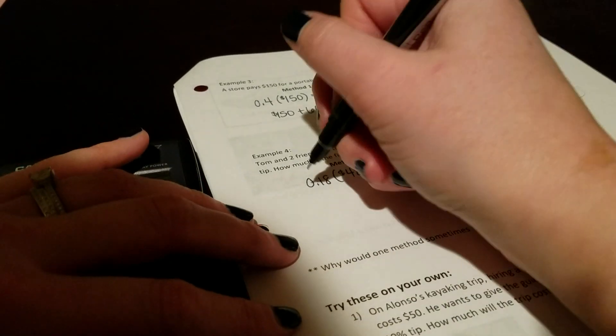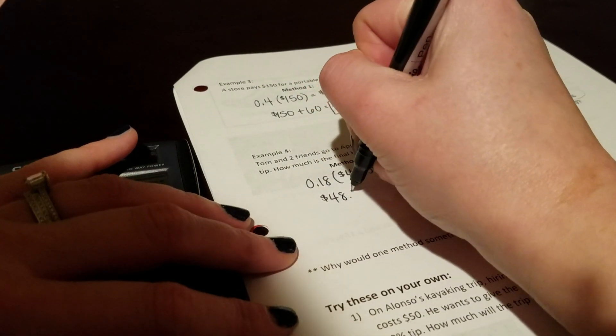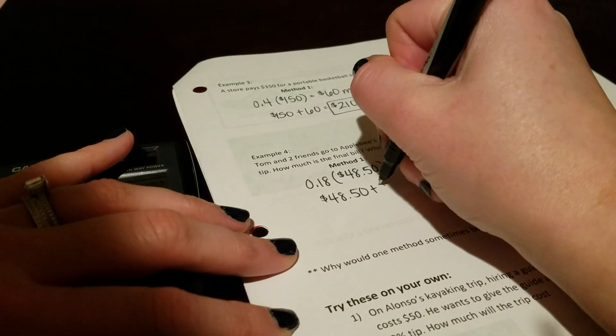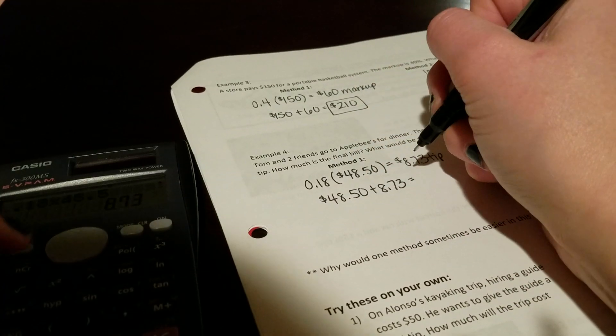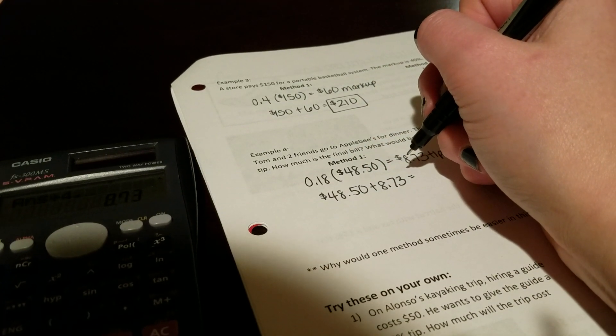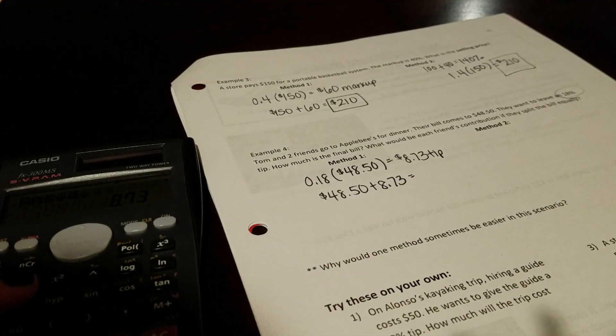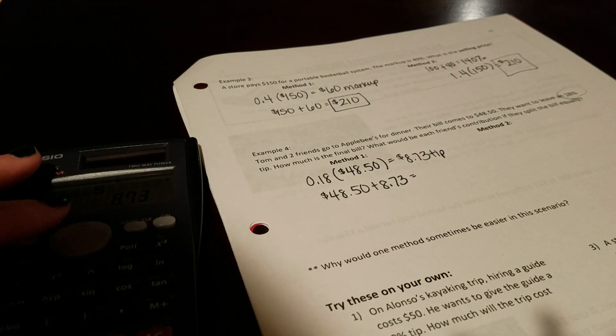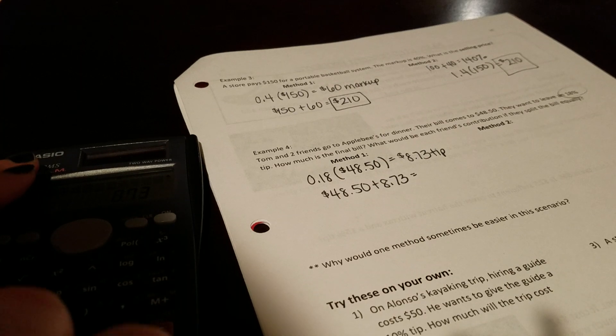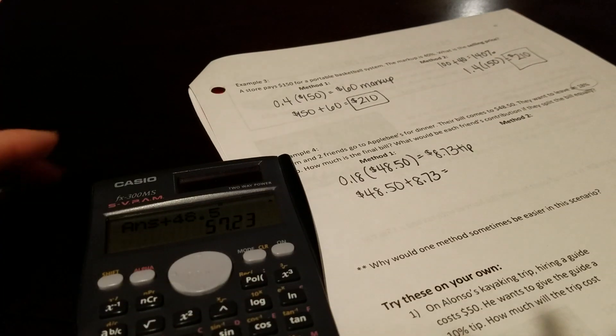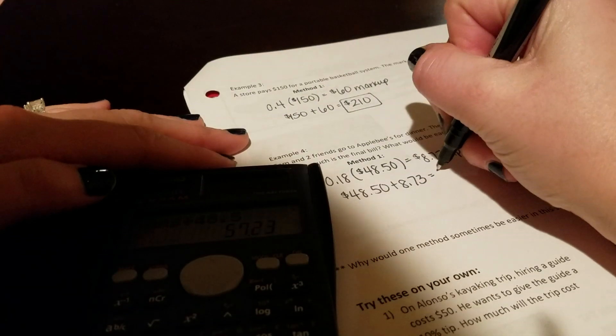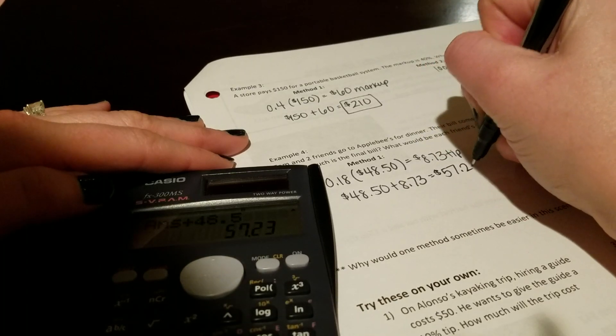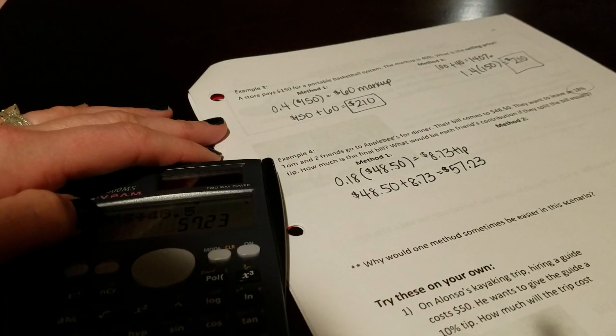Tip again starts with a T, so it reminds you to add. I'm trying to type on a calculator one-handed here is not very easily. So if I take that, add it in, $57.23 is their total meal.